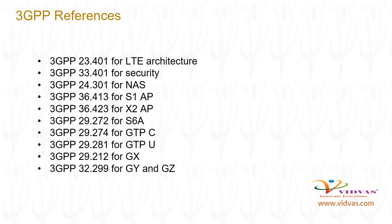The following is the list of 3GPP references: 3GPP 23.401 for LTE architecture; 3GPP 33.401 for security; 3GPP 24.301 for NAS; 3GPP 36.413 for S1-AP; 3GPP 36.423 for X2-AP; 3GPP 29.272 for S6A; 3GPP 29.274 for GTP-C; 3GPP 29.281 for GTP-U; 3GPP 29.212 for Gx; 3GPP 32.299 for Gy/Gz.